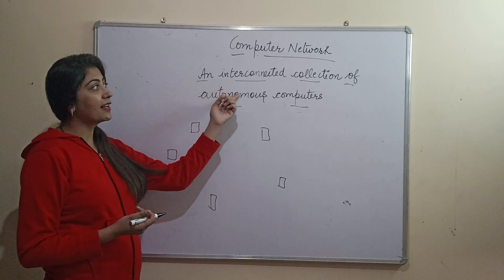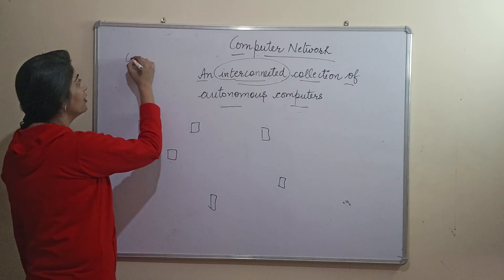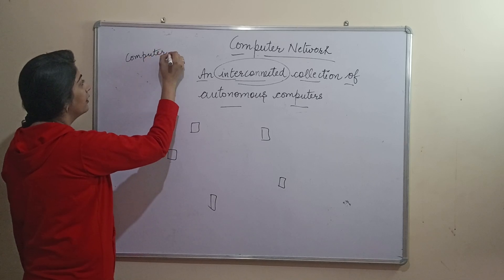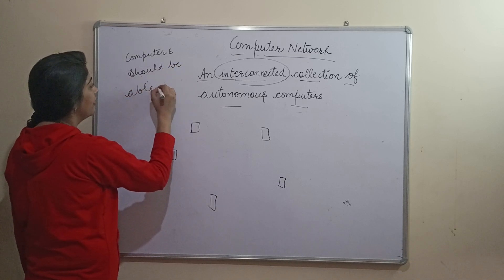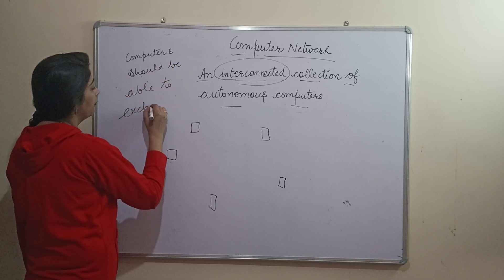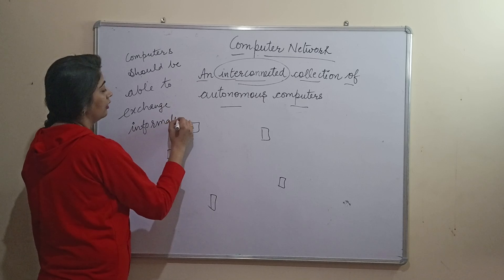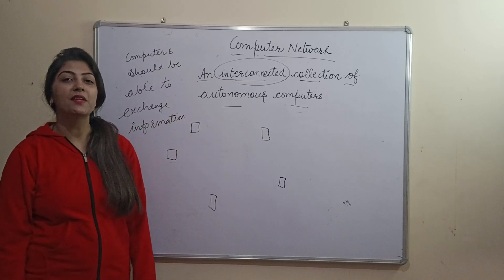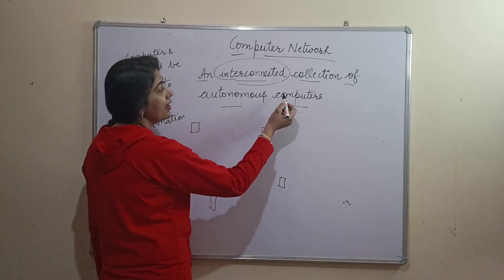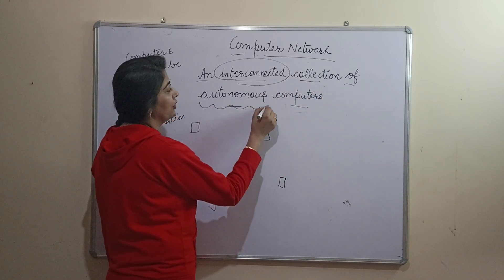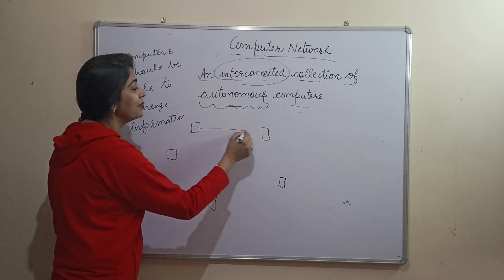A computer network is an interconnected collection. What does 'interconnected' mean? It means the computers should be able to exchange information. Our computer is able to exchange information, and we have to use the network as well. Now, what is meant by 'autonomous'? Autonomous means that you connect with computers and also connect with other computers.